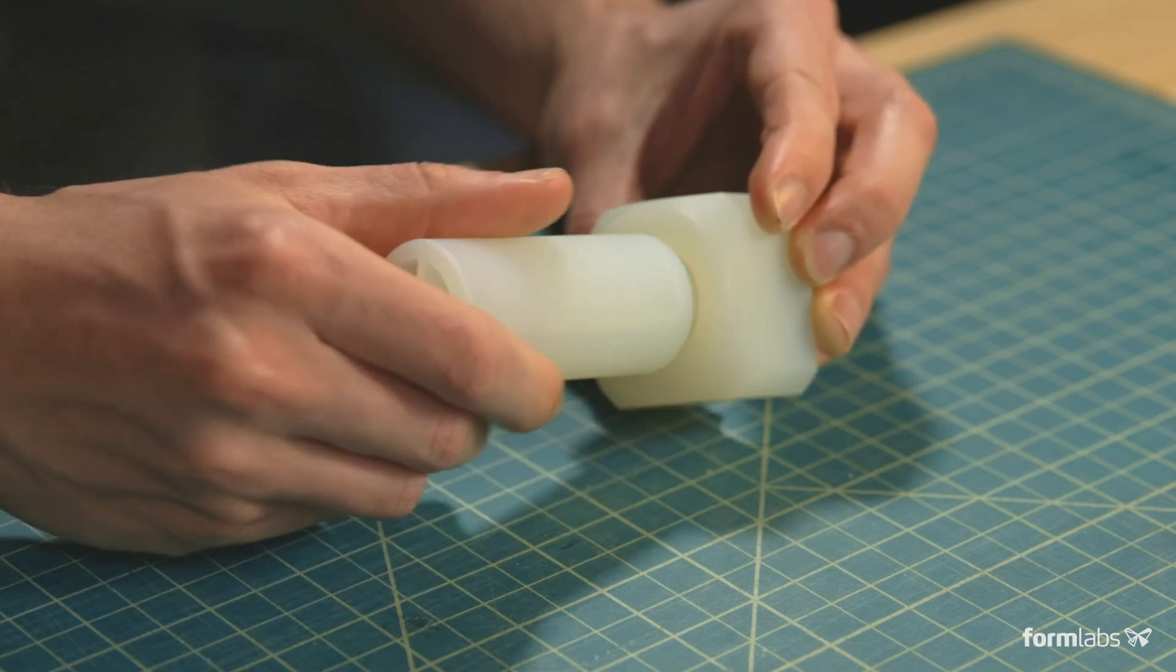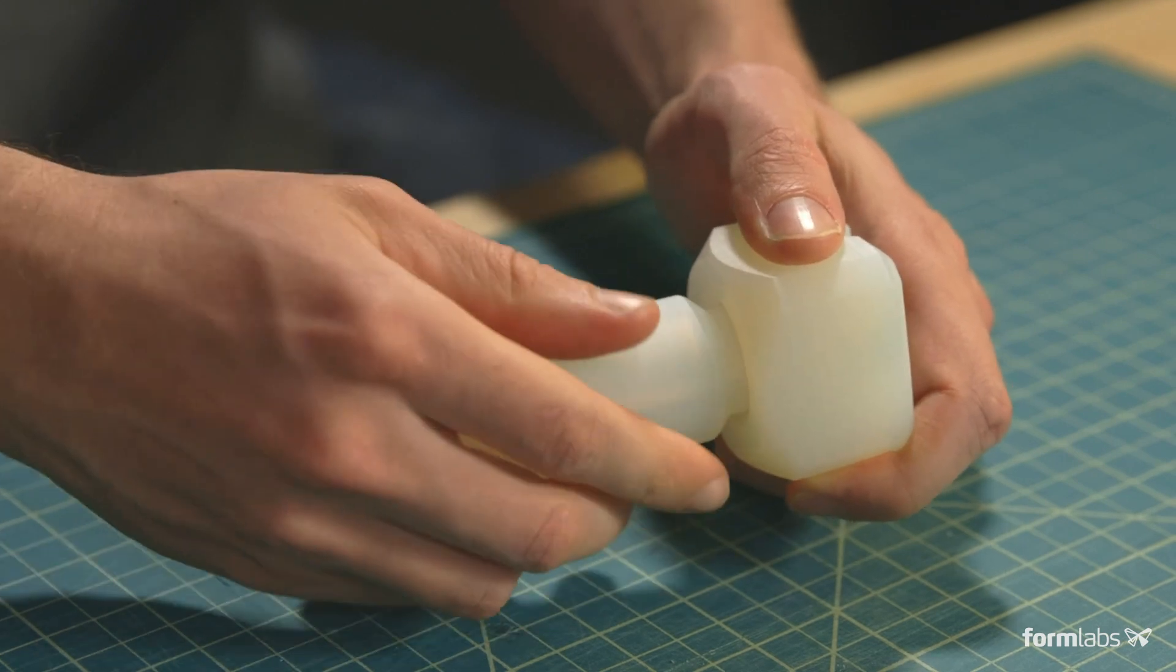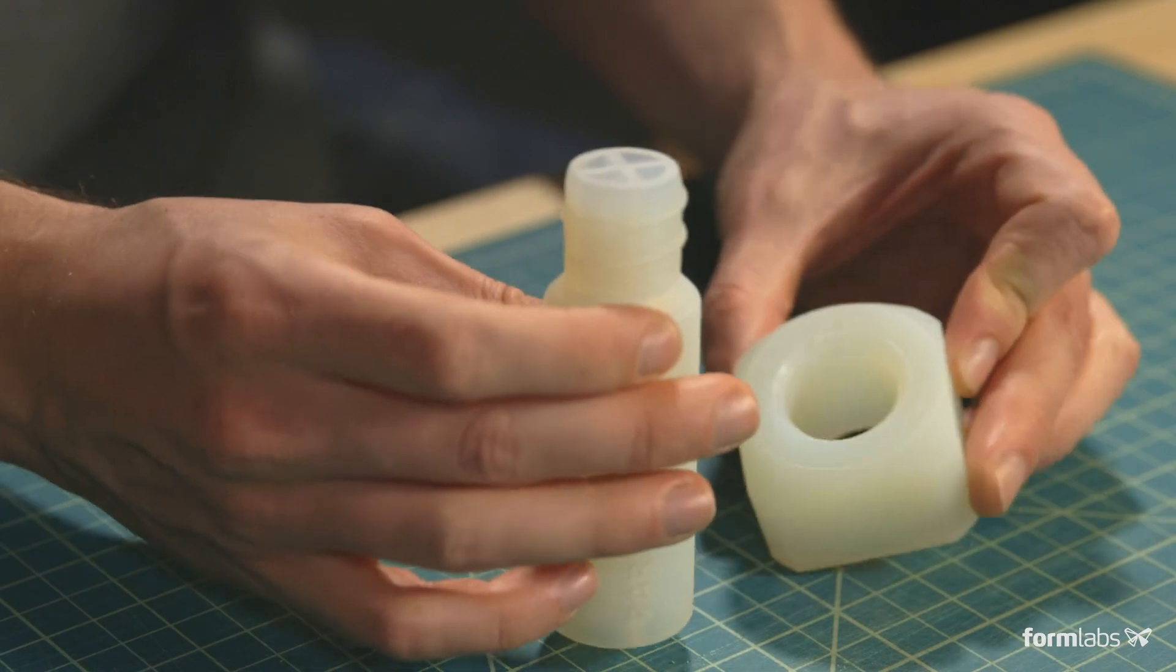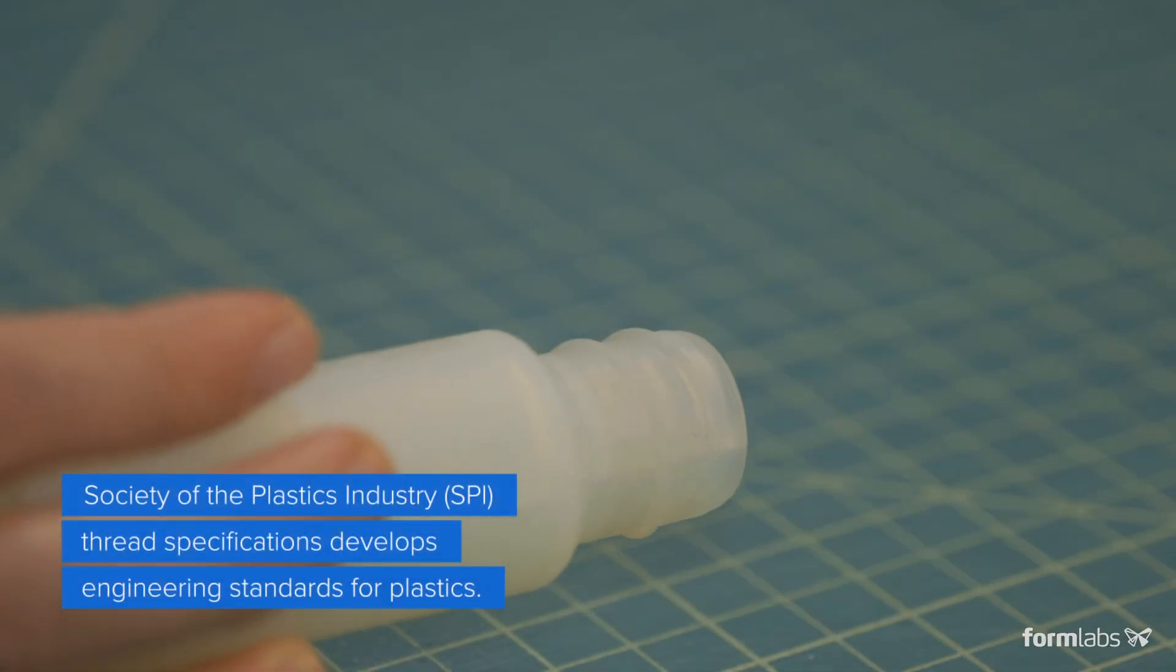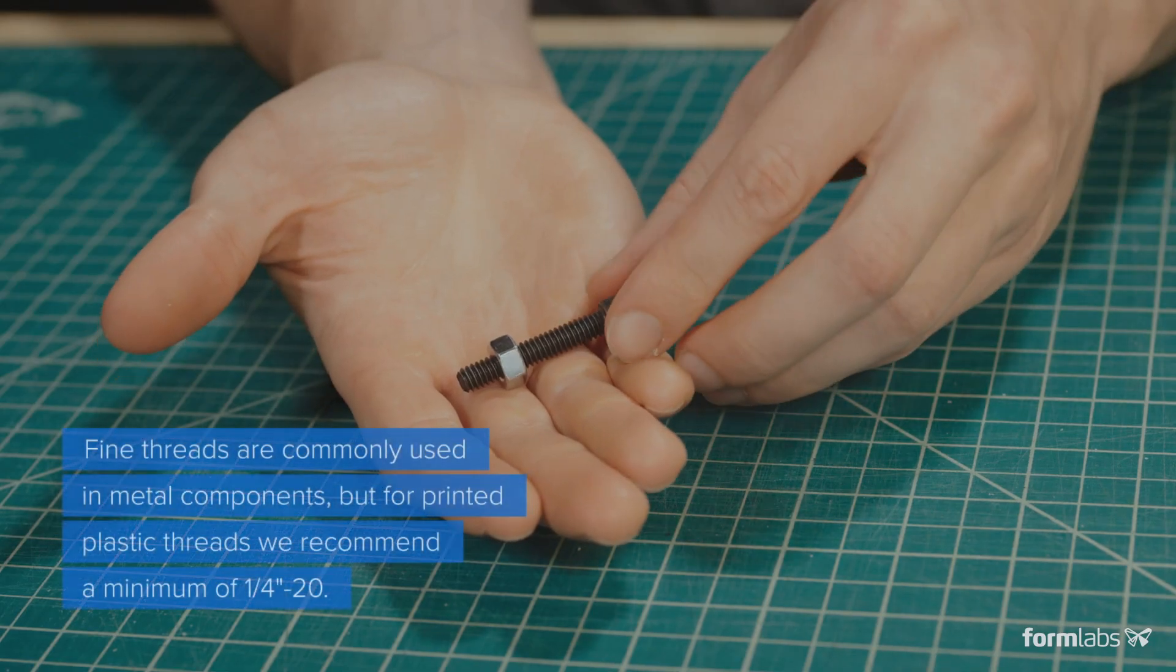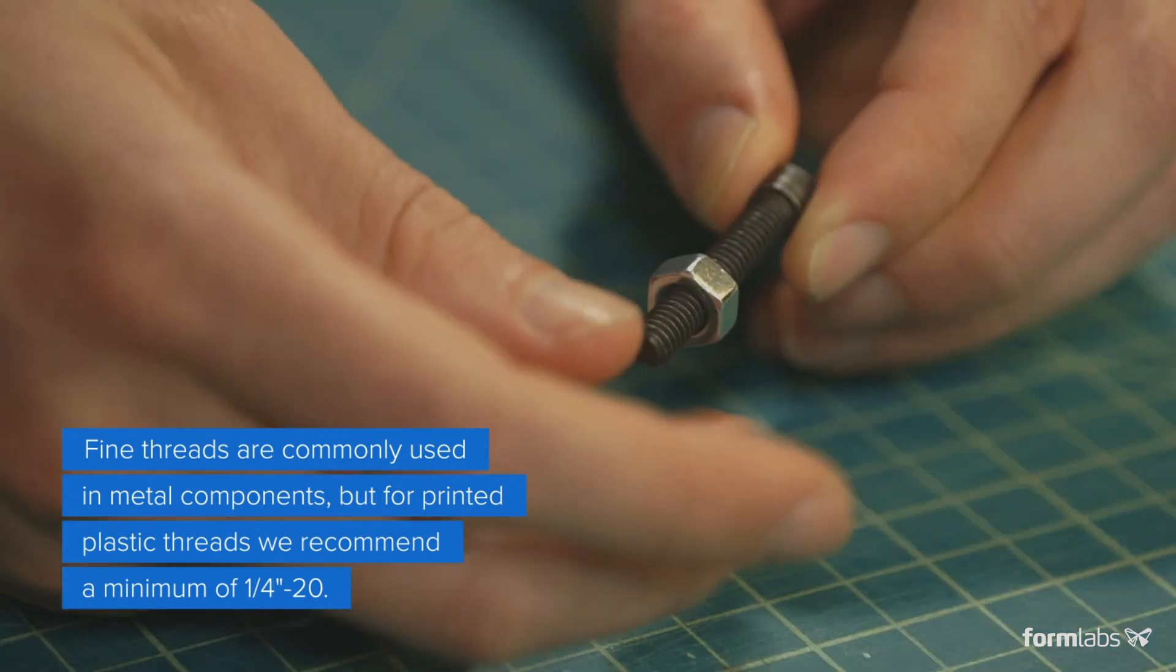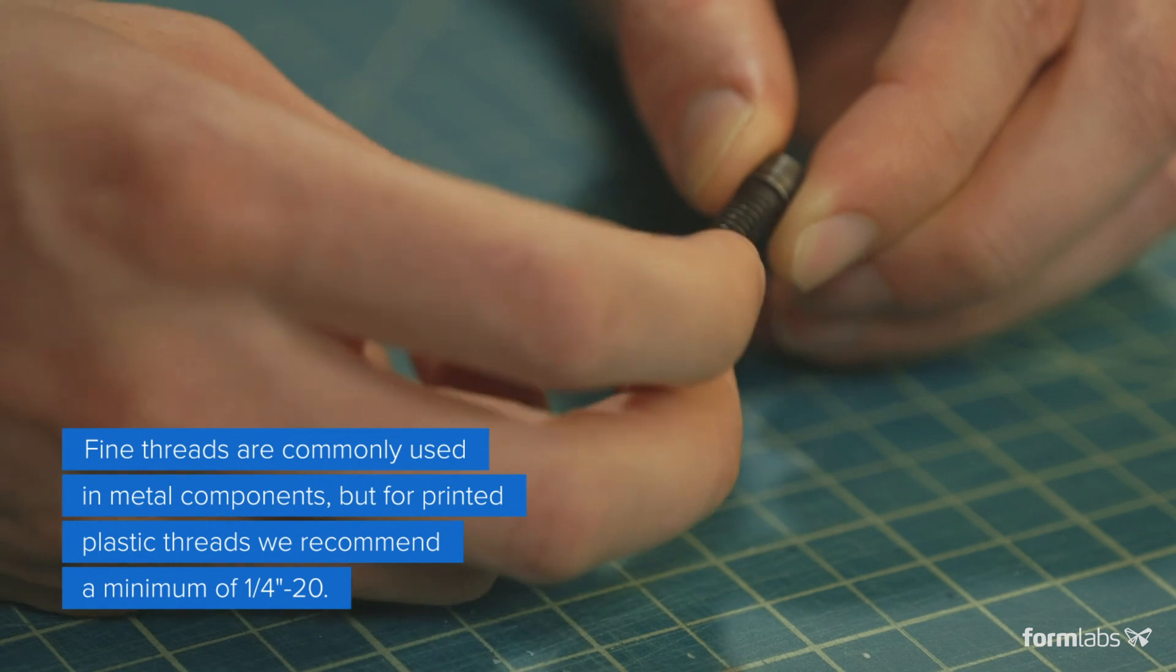Keeping thread profiles larger and reducing the stress concentrations with fillets will make your assembly stronger and help your threads last. When possible, instead of using machine geometry for threads, use thread forms that are designed for plastics like SPI dimensional specifications. The finer the thread, the more fragile a part will be, so avoid using thread profiles smaller than 1/4-20, especially if the parts will be assembled multiple times.